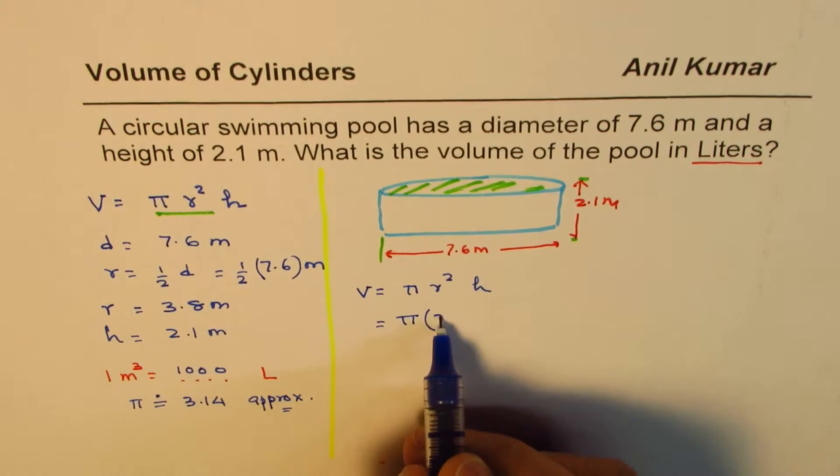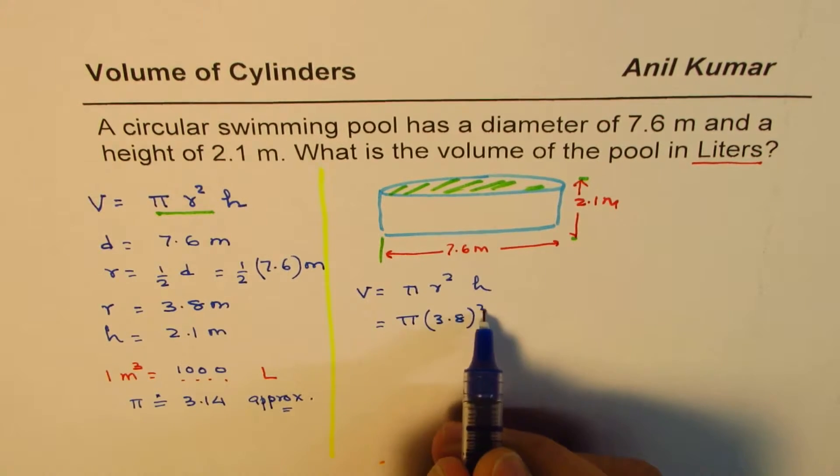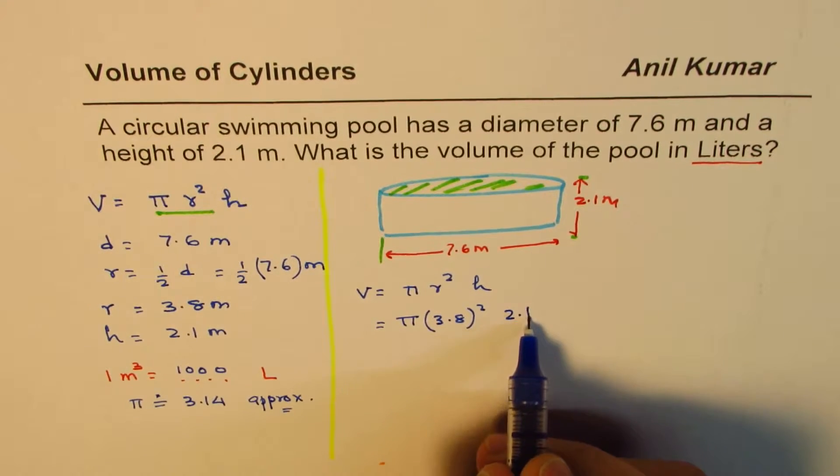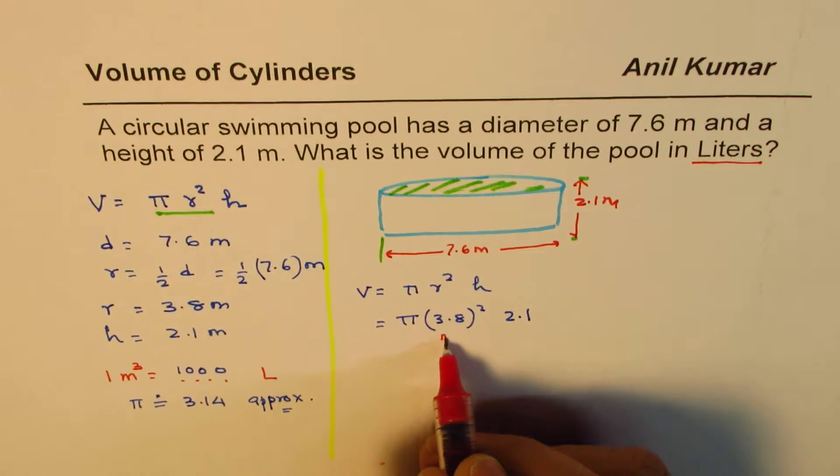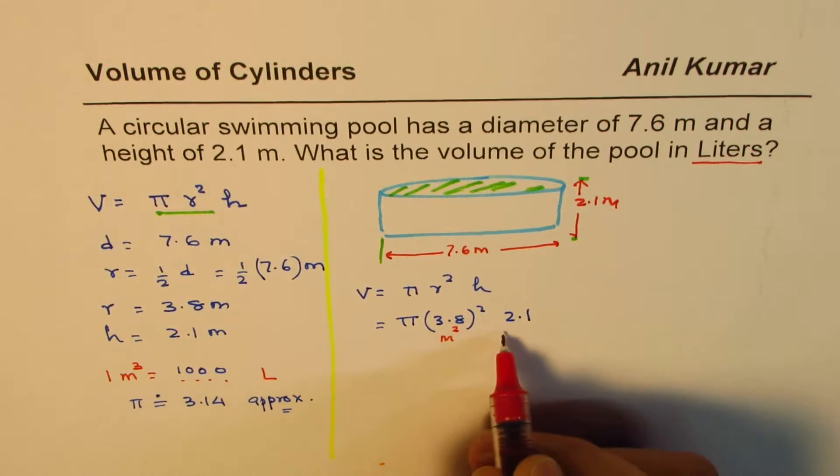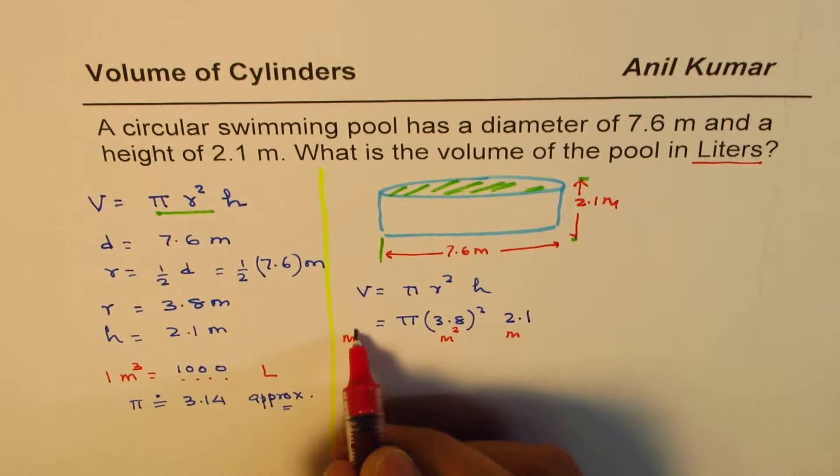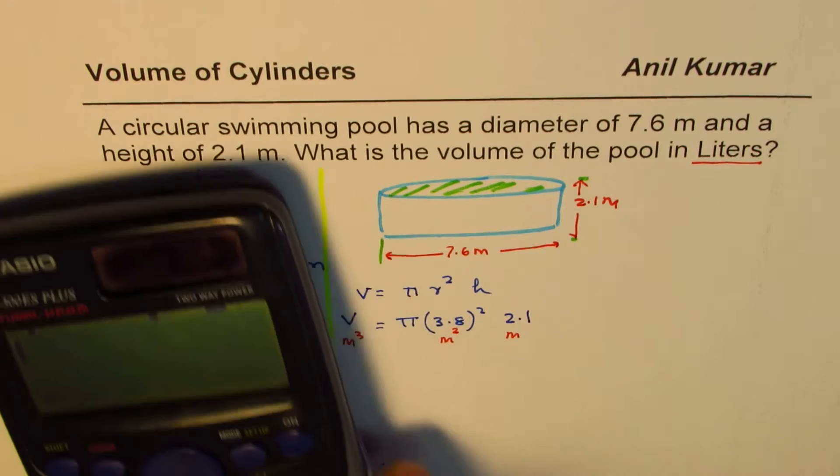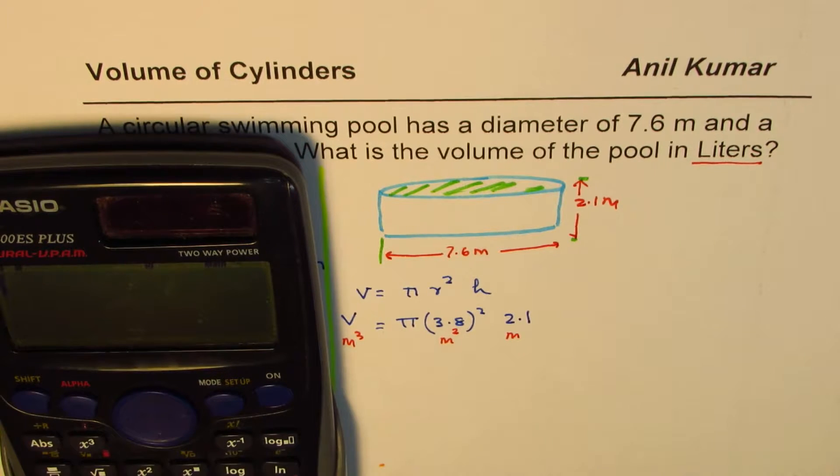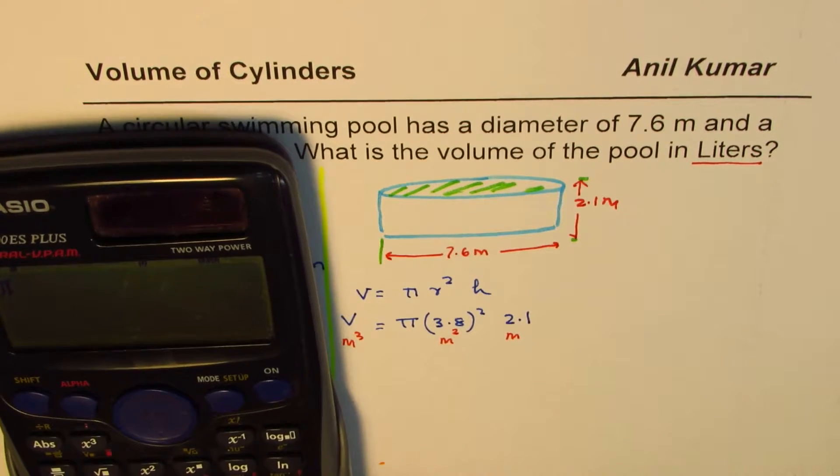Radius is 3.8, so let me write 3.8 whole square times height which is 2.1. The units are: since you multiply this meter it becomes meter square, this is meters, and that will result in meter cube for volume. So the units are in meter cube. Let's use the calculator. We'll use π as such.